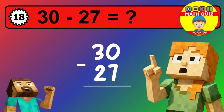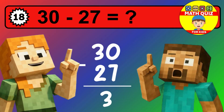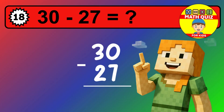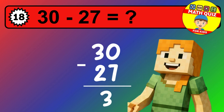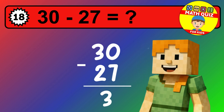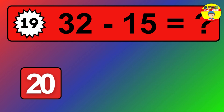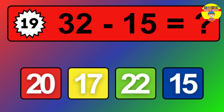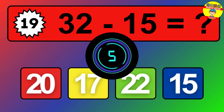We start with the units. 5 minus 9 is not possible, so we need to regroup. We take one 10 from the tens column. Now we have one tens, and the units become 15. Now we subtract. 15 minus 9 is 6. Then we go to the tens. 1 minus 1 is 0. The final answer is 6.